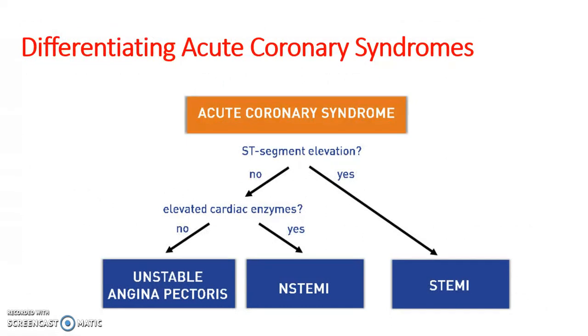How do you differentiate between acute coronary syndromes? Looking at the broad picture: first, look at the ECG — is the ST segment elevated? If yes, it is likely a STEMI. If not, look at elevated cardiac enzymes — is troponin elevated? If yes, it is an NSTEMI. If no, it is unstable angina pectoris. Unstable angina is unpredictable and often occurs at rest, whereas with stable angina it develops on exercise and eases at rest.